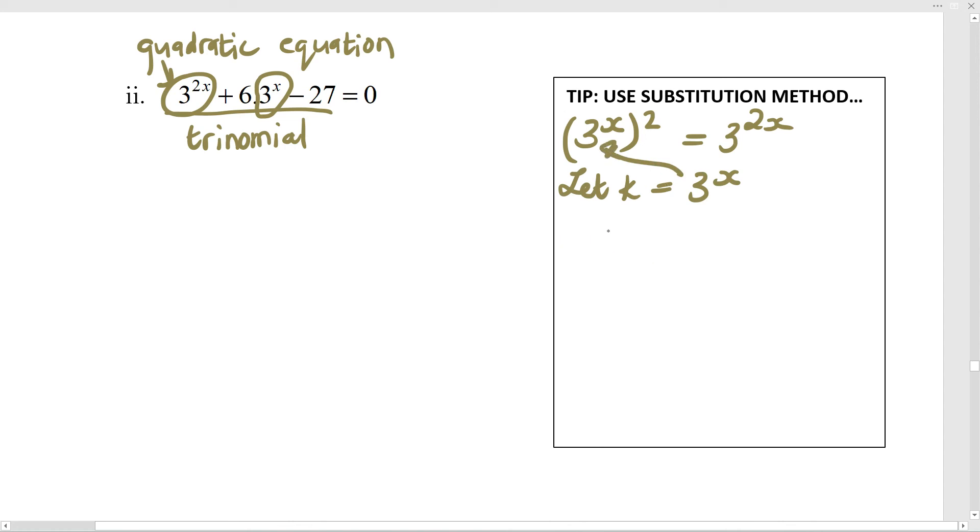Watch what I can do now. Now I can say, let me sub in k for everything that was 3 to the x over here. But we agreed that 3 to the 2x was just 3 to the x that got squared. So that means 3 to the 2x is k squared. Then I've got k squared plus 6 times 3 to the x, but 3 to the x was k. So it's just 6k minus 27 equals 0. So I've subbed out the 3 to the x with a k. And now this is an ordinary quadratic equation to a point. Until I've got to sub back again.